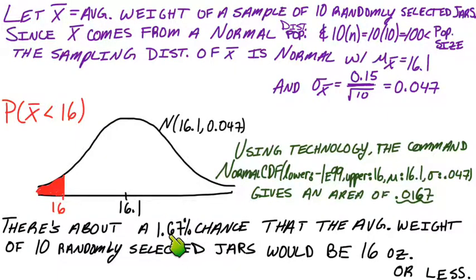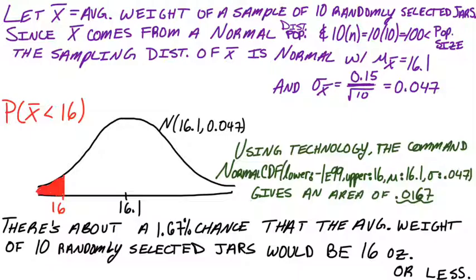So it's much less likely that we get a sample mean to be less than 16 ounces. We talked about the sampling distributions for a sample mean — the shape, the center, and the spread — and what happens when they come from normal distributions. One big takeaway from this last example: individuals have the ability to vary far more than averages do. An average of 10 jars isn't going to vary nearly as much as just an individual jar's contents. That is all for these notes — I'll see you in class.